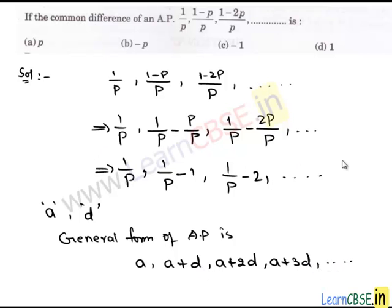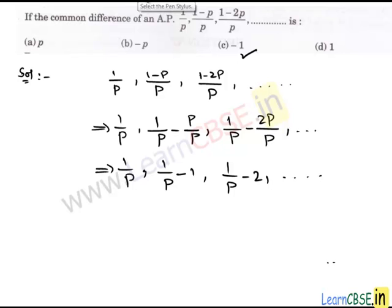Now, if we compare the given series with the general form of an AP, we get the value of A is 1 upon P and common difference D is negative 1. Therefore, we can say that negative 1 is the common difference of this AP, or we can use another method.